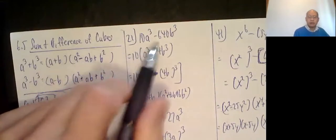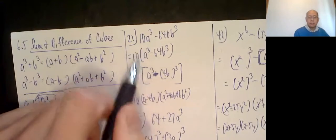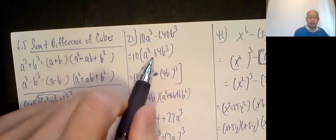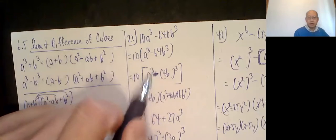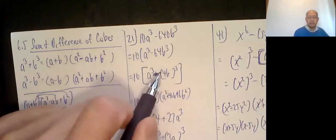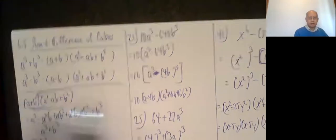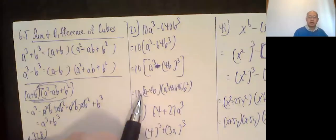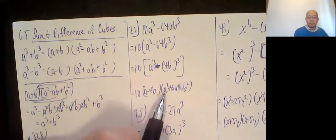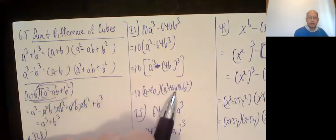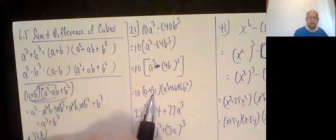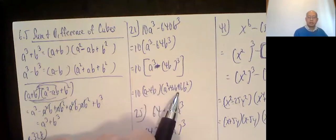Factor out the common factor of 10. 10 comes out. a cubed minus 64b cubed. So just like a previous one, a cubed minus parentheses 4b cubed. Then I use this formula here. So leave it alone at 10. a minus 4b, a squared plus the product of these 4ab plus this thing squared. 4b squared is 16b squared.